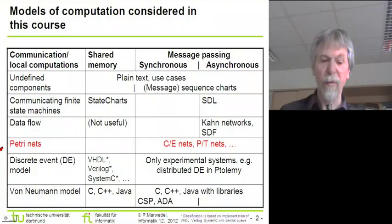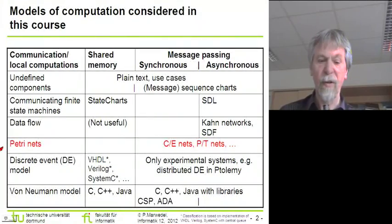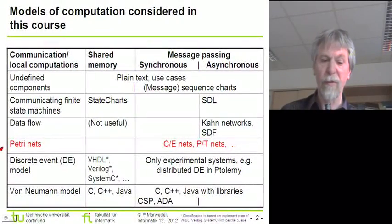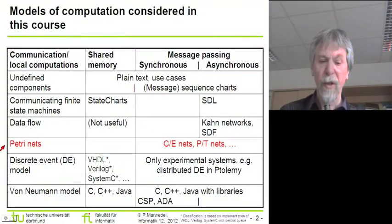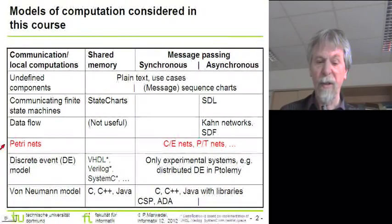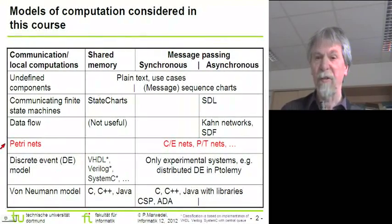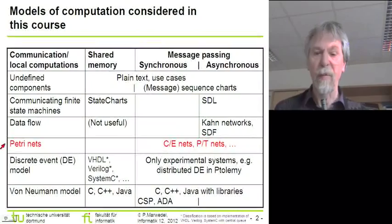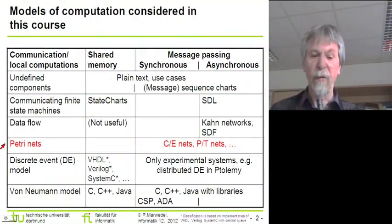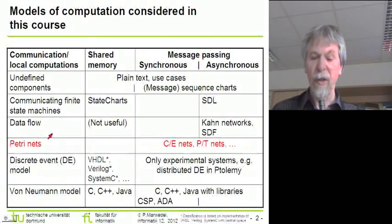That model of computation can be seen on the next row of our table. In this next row we see there is an entry called Petri Net, so that's the model I'm going to describe for the computations in the components. Actually we will be looking at three different classes of Petri Nets.